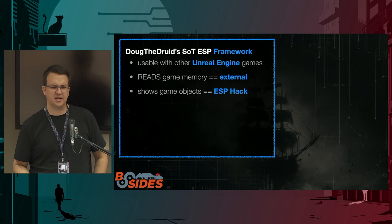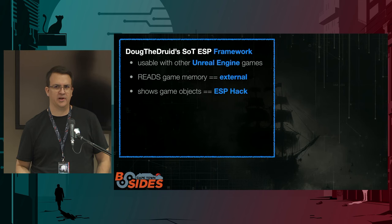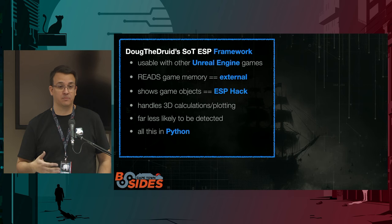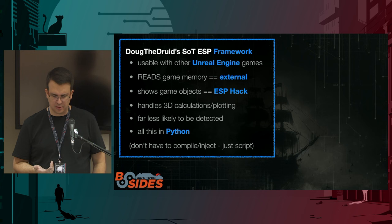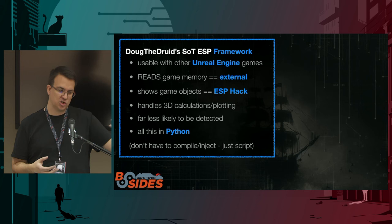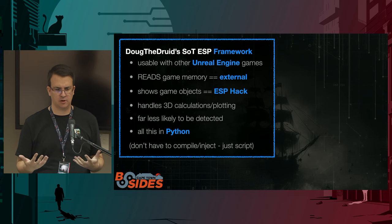The framework is for Unreal Engine games — in this case configured for Sea of Thieves, but presumably could work with a wide range of games. It only reads memory, so that makes it an external hack. There's no DLLs being injected, nothing being changed, no chance of crashes, not very much to be detected. And yet it functions like an ESP, showing you other elements of the game you would not normally see. It handles all the 3D calculations and plotting, is a lot less likely to be detected, and it's all Python code — no compiling, no slow DLL injection feedback loop.